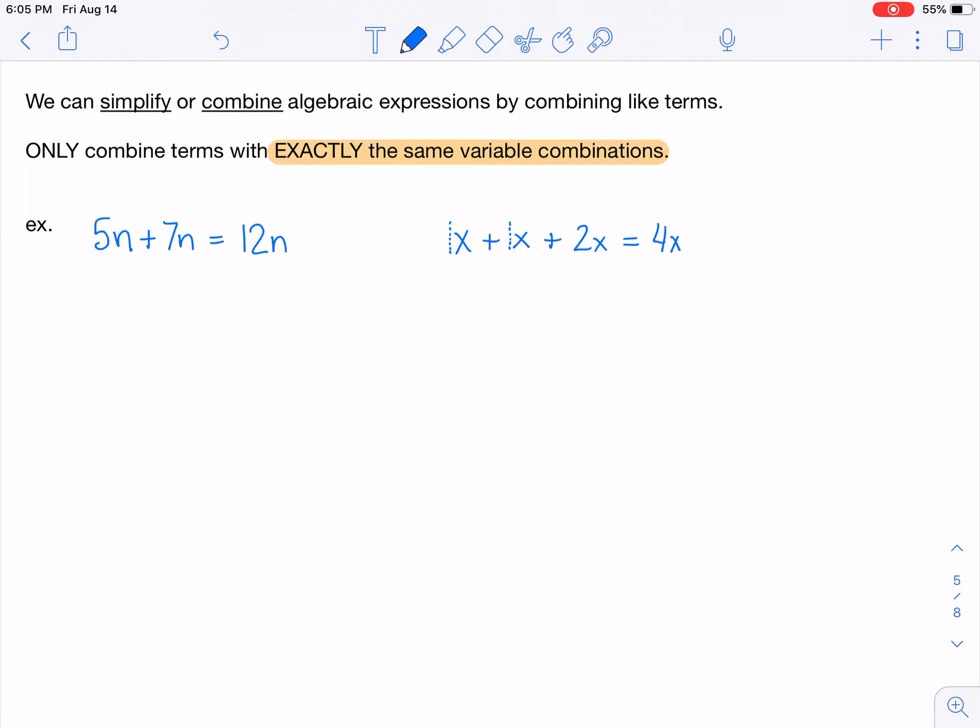Another example. Let's do one that has a minus. 10y minus 3y. So 10 minus 3 is 7. So 10y minus 3y is 7y.